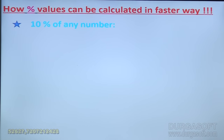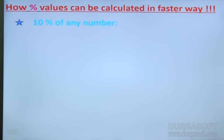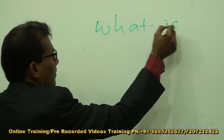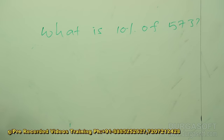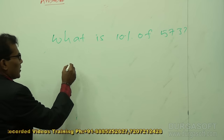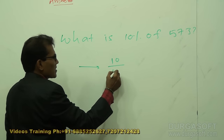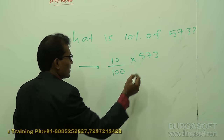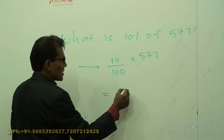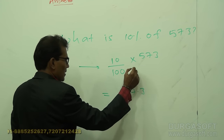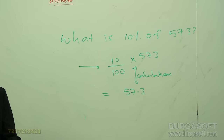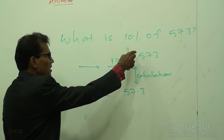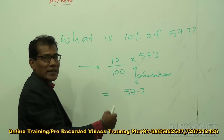Let us start with 10% of any number. For example, what is 10% of 573? Normally you would write out the calculation to get 57.3. But in a real-time exam we don't have that much time. There is a direct technique to reach 57.3 instantly.